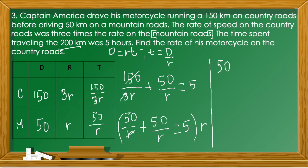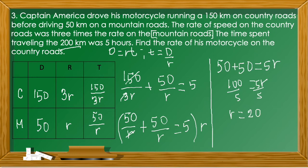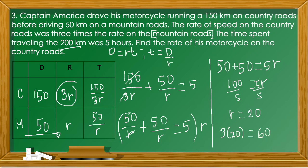Dividing both sides by 5 gives r = 20, which represents the rate on mountain roads. Since we need the rate on country roads, we multiply by 3: 3 × 20 = 60. Therefore the rate of Captain America's motorcycle on the country roads is 60 kilometers per hour. That is our answer for problem number three.